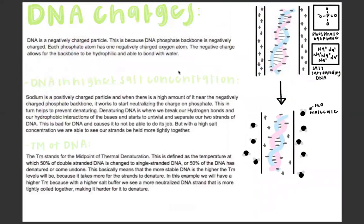DNA is a negatively charged particle because the phosphate backbone has an oxygen atom that is negatively charged. The negative charge allows for the backbone to be hydrophilic and able to bond with water. This picture up here shows how the negative charges of the DNA backbone are surrounded by the positive charges of the salt saline buffer.